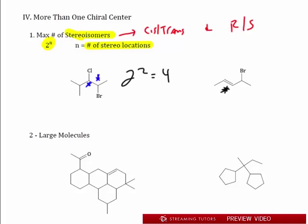Now what about a system with both cis/trans and R/S? You have cis/trans on one part and R/S on another, so again 2 to the 2 is four possibilities: cis and R, cis and S, trans and R, trans and S. That's always going to be 2 to the n as the maximum number of stereoisomers. I say maximum because with meso compounds you can get less, but we'll get to that in just a minute.